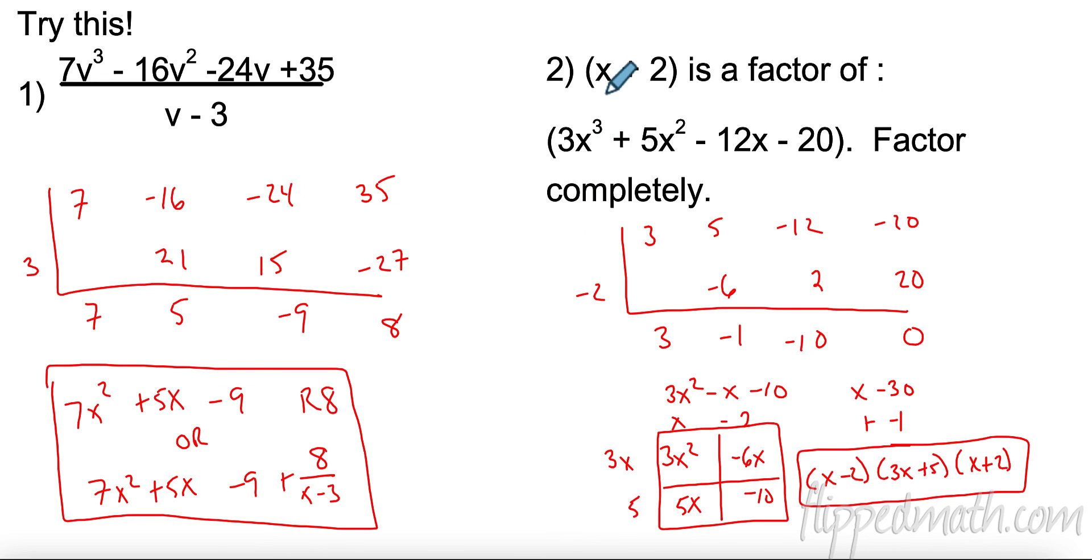All right. Number two. It says this is definitely a factor. I divided it by negative 2 because it was x plus 2 equals 0. And I found it did. It was a factor. So I had 3x squared minus x minus 10 left. I factored that polynomial with my box. I got 3x plus 5 and x minus 2. But don't forget, x plus 2 is one of the answers as well. If I have a degree, 3, I should have 3. 1, 2, 3. 3x is in there. And I sure do.